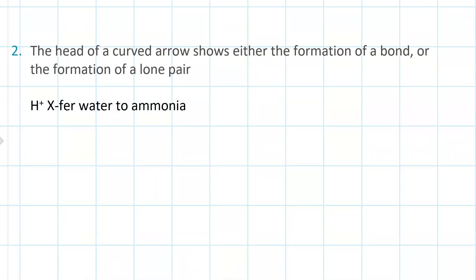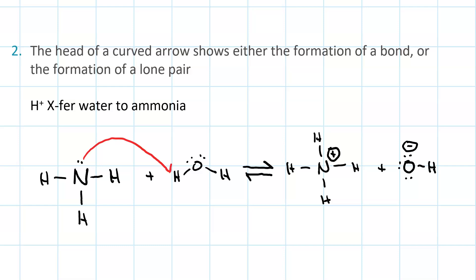Rule number two, the head of a curved arrow shows either the formation of a bond or the formation of a lone pair. In a proton transfer reaction, we can see both. Here water is transferring a proton to ammonia. The first curved arrow starts on nitrogen on the lone pair and forms a sigma bond with that hydrogen. So that's forming this bond right here.